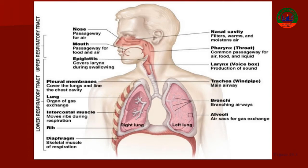The epiglottis is a structure that separates the larynx from the hypopharynx. Epiglottis ek aisi structure hai jo separate karti hai larynx ko from the hypopharynx.